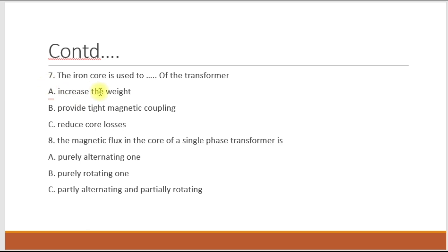Seventh question: the iron core is used to — increase the weight, provide tight magnetic coupling, or reduce core losses? The iron core is used to provide tight magnetic coupling — option B is correct. Eighth question: the magnetic flux in the core of a single phase transformer is — purely alternating, purely rotating, or partially alternating and partially rotating? The magnetic flux in the core of a single phase transformer is purely alternating — option A is correct.